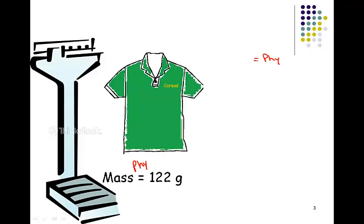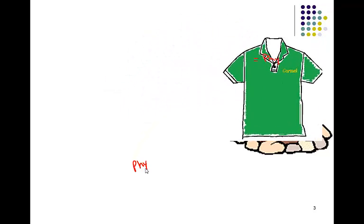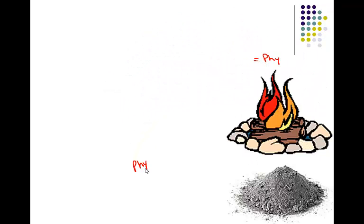But what if we wanted to test the flammability of the shirt? Well, by putting the shirt into the fire, we would create something new. We create ash. This is a different chemical composition than our original polo. So flammability is a chemical property.